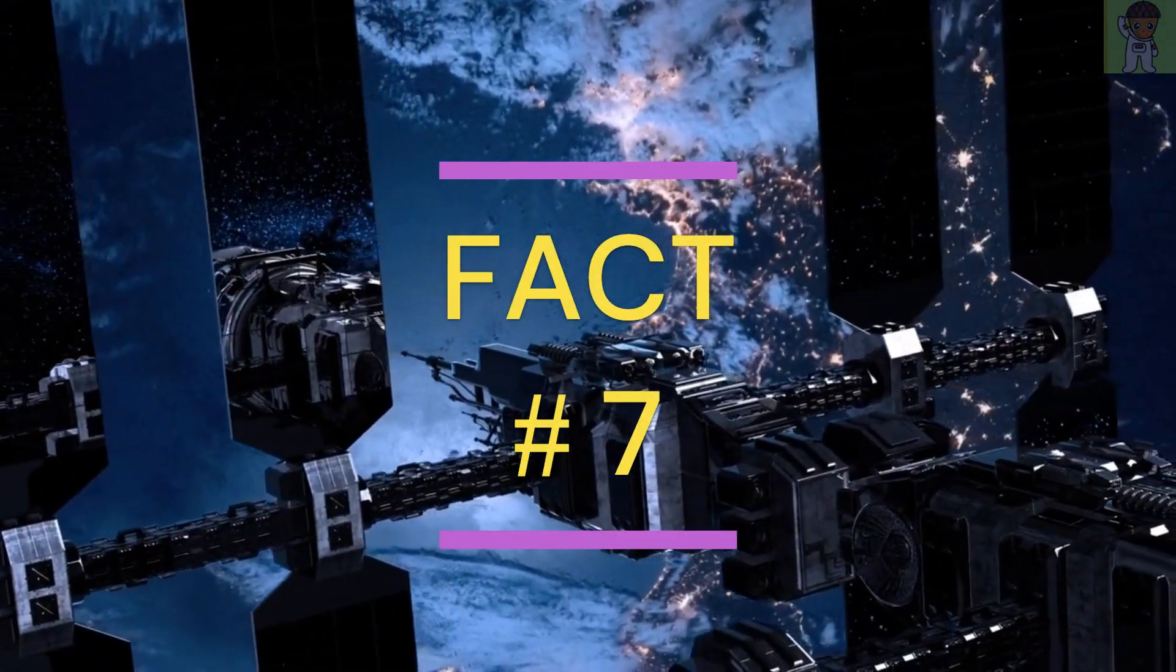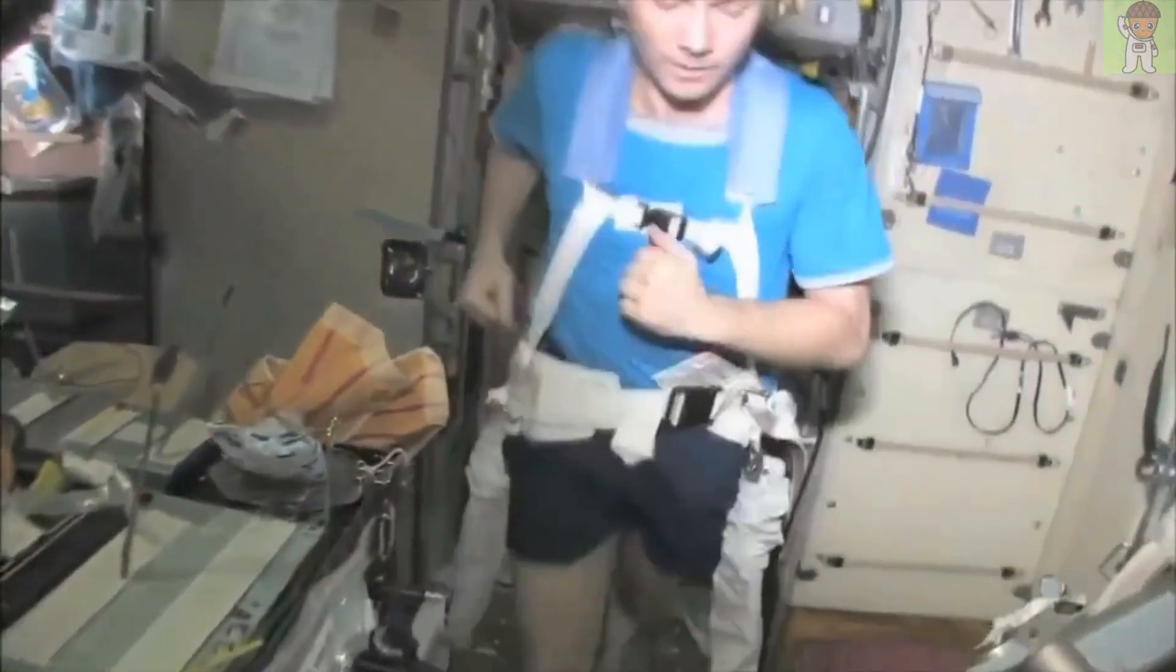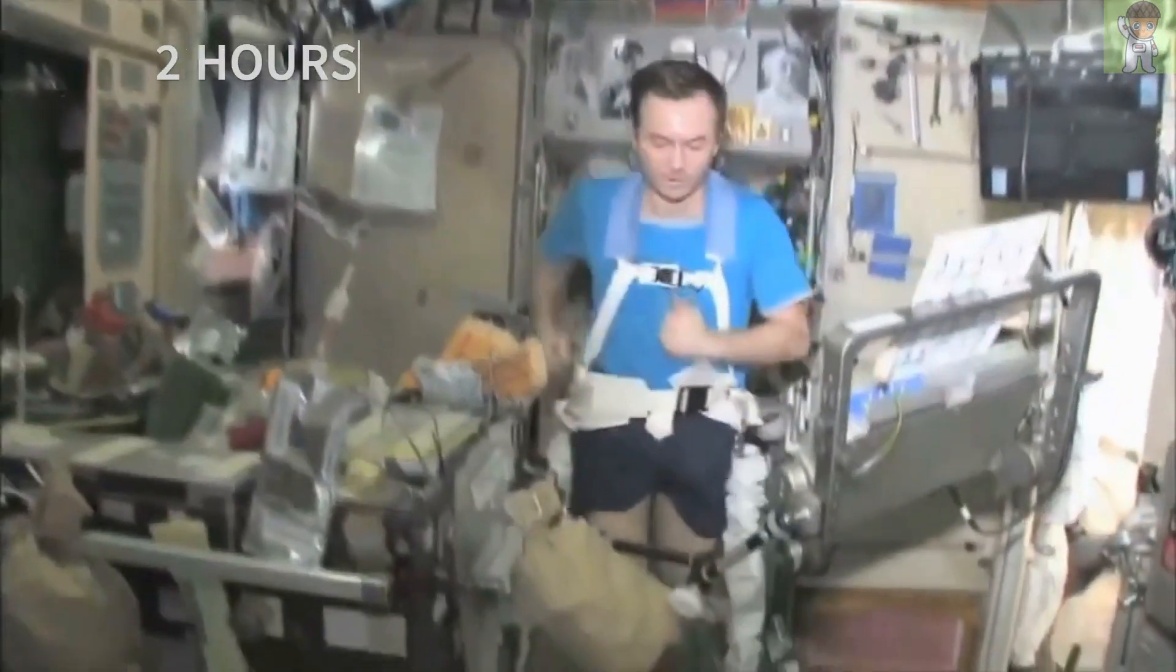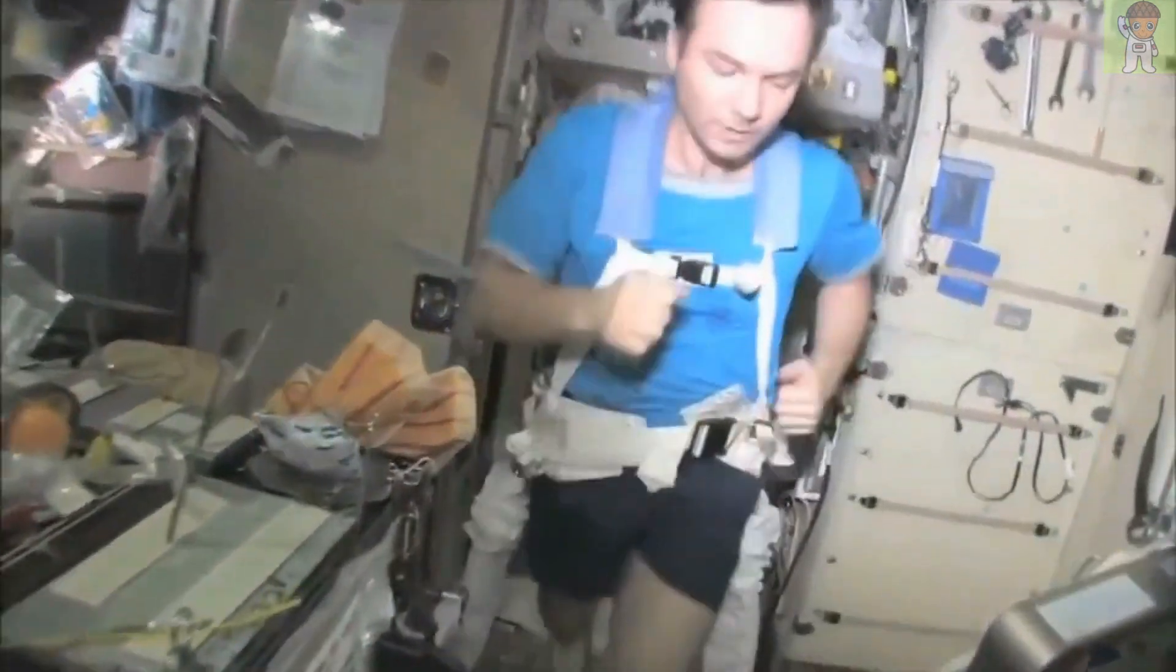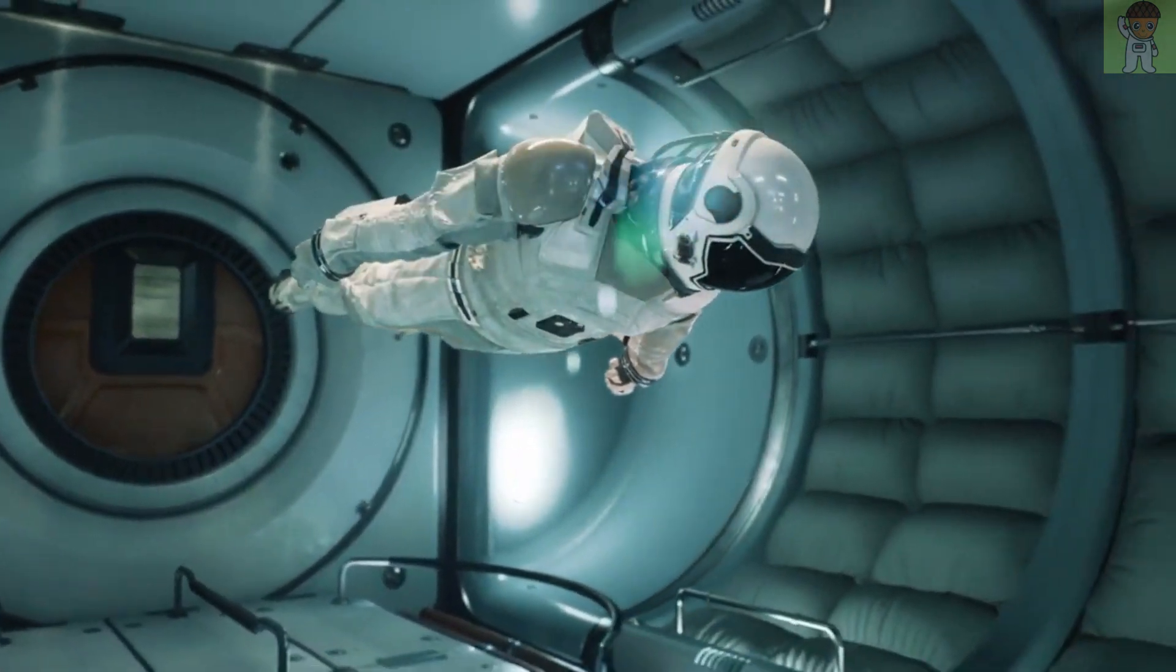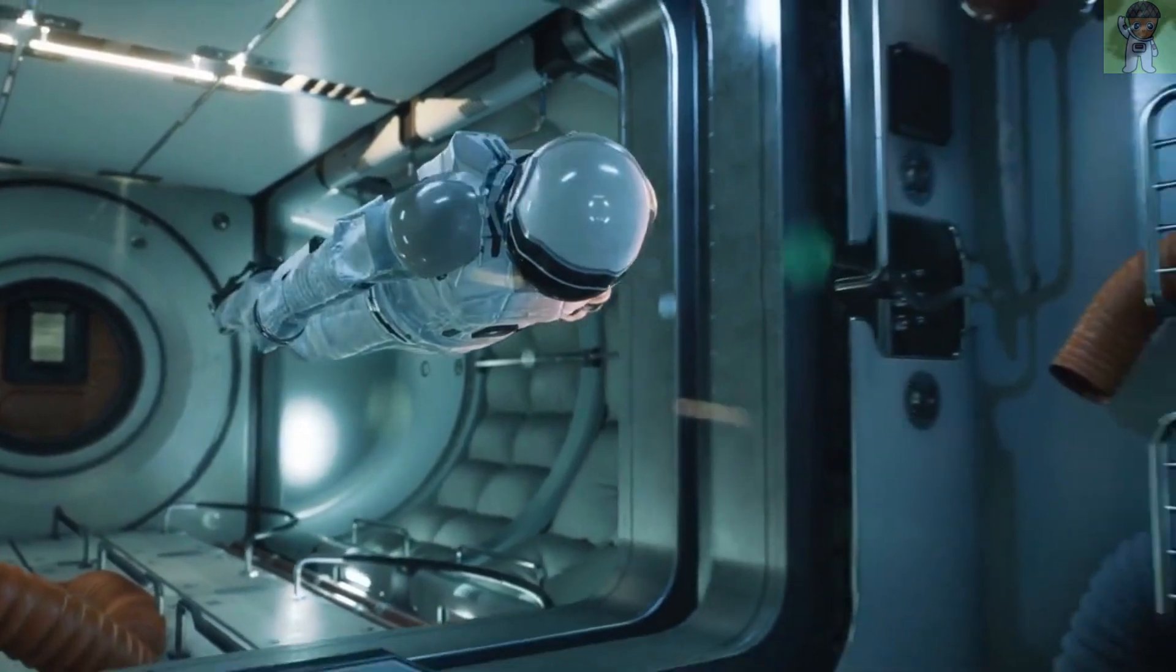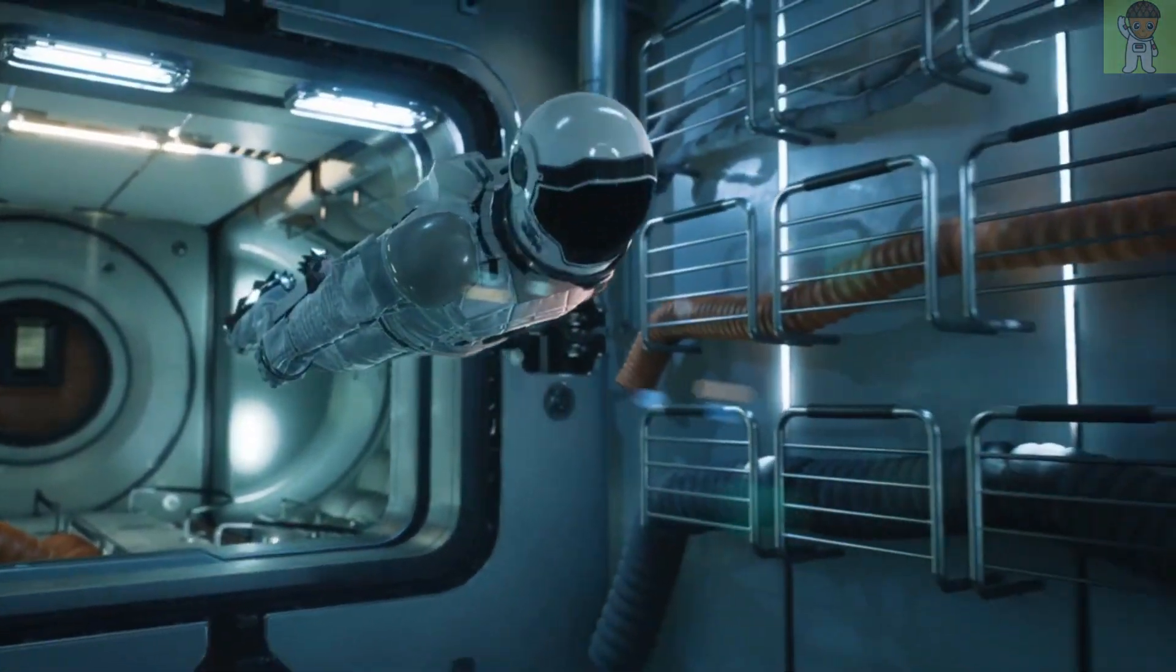Fact number 7. Finally, did you know that astronauts on the International Space Station have to exercise for 2 hours a day just to maintain their muscle and bone mass? That's because in the microgravity environment of space, the body doesn't have to work as hard to move around, which can lead to muscle and bone loss over time.